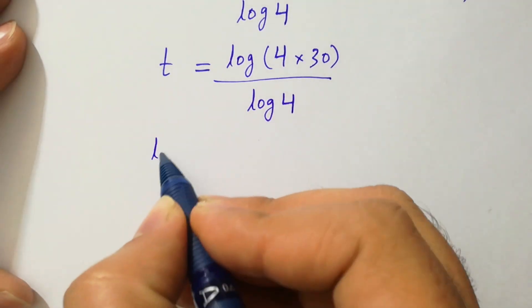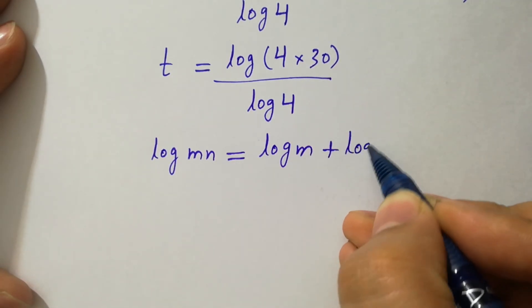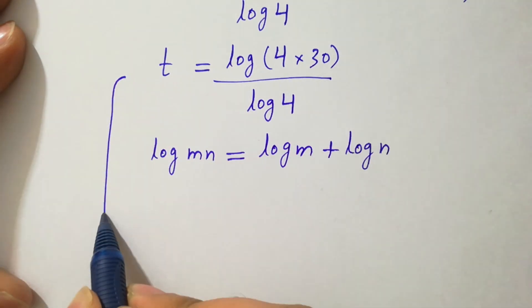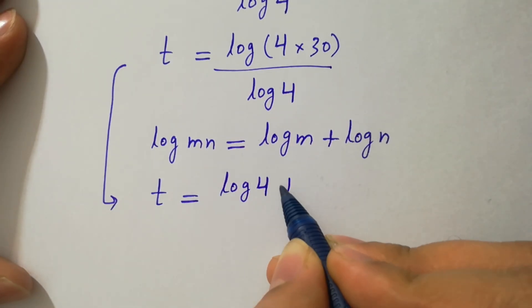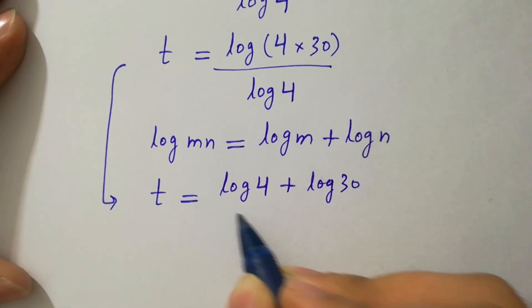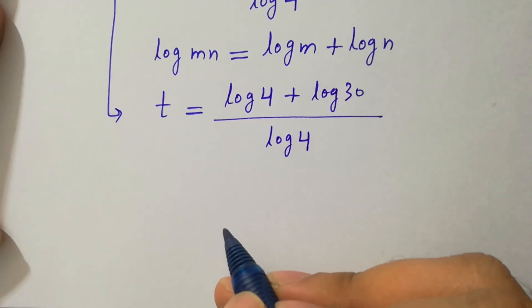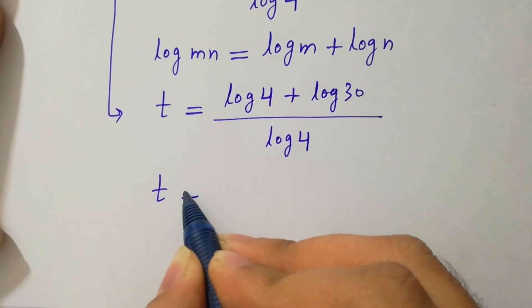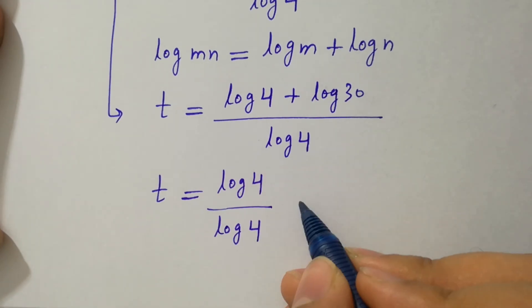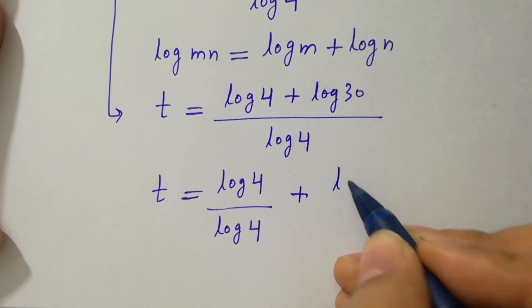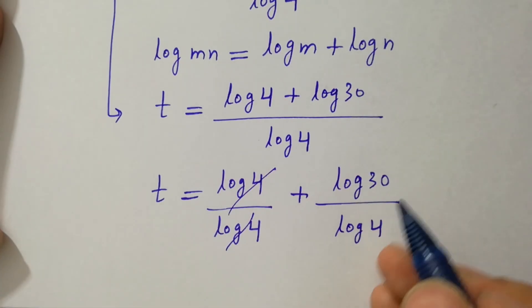Since log m·n equals log m plus log n, we get t equal to log 4 plus log 30, all over log 4.